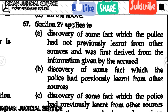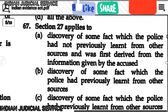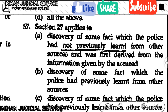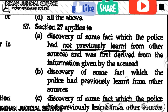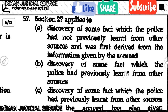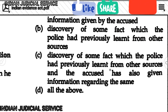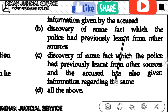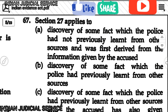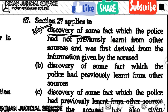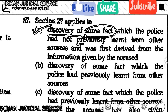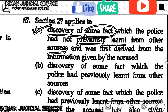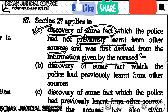Question number 67: Section 27 applies to the discovery of some fact which the police had not previously learned from other sources and was first derived from information given by the accused. The answer is option A — discovery of a fact which the police had not previously known, first derived from the accused's information.